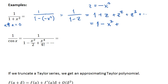So that's 1 minus x squared, z squared is x to the fourth, z cubed is minus x to the sixth, z to the fourth would be plus x to the eighth and so on. That's valid for absolute value of z less than one, which is the same thing as absolute value of x less than one.